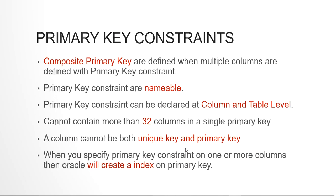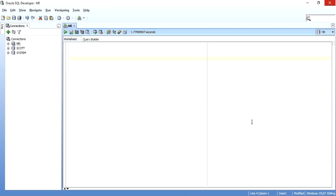When you create a primary key constraint on a column or multiple columns, Oracle implicitly creates an index on that column or set of columns. This is a commonly asked interview question: what happens when you create a primary key? Of course you declare the column as primary key, but Oracle also implicitly creates an index on it.